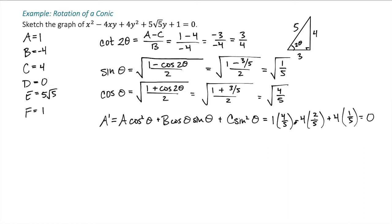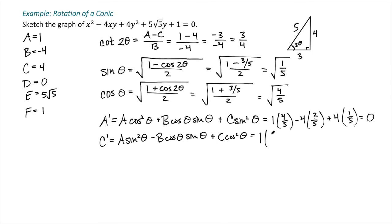For C prime, the formula is A sine²θ minus B cosine θ sine θ plus C cosine²θ. A is 1 and sine²θ is 1 fifth. Minus B — but B is negative, so that's plus 4 — times cosine θ sine θ, which is 2 fifths. Plus C, which is 4, times cosine²θ, which is 4 fifths. That gives 1 fifth plus 8 fifths plus 16 fifths, which is 25 fifths, or 5.